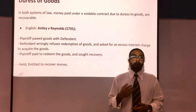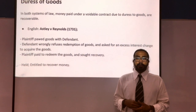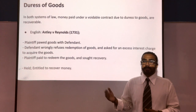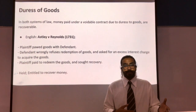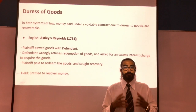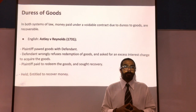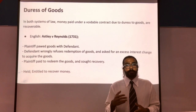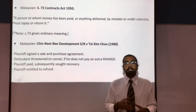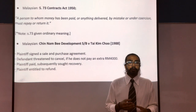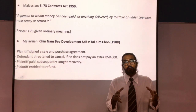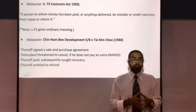The next similarity concerns duress to goods. In both systems of law, it is recognised that if money has been paid under a voidable contract for duress of goods, it is recoverable. The English law approach is seen in Astley v Reynolds 1731, where the plaintiff pawned goods with the defendant, who refused repossession unless the plaintiff paid extra interest. The plaintiff sought recovery, argued the contract was voidable, and successfully recovered the money. Similarly, Section 73 of the Contracts Act 1950 provides that any money paid or anything delivered by mistake or under coercion must be repaid or returned. It is important to note that Section 73 coercion is interpreted widely compared to Section 15.